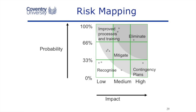Any risk in the top corner with high impact and high probability — you're going to eliminate that risk. Whereas risks with low impact and low probability, you just recognise that they exist. This is because as you go through the project, things could change, and that risk's probability or impact might increase.